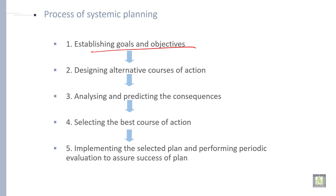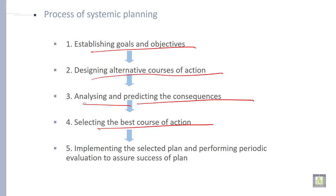The second step is designing alternative courses of action. Don't plan only one course of action — plan alternative courses of action. Then, analyzing and predicting the consequences. Select the best course of action from whatever options you have. Then, implement the selected plan and perform periodic evaluation to assure success of the plans.